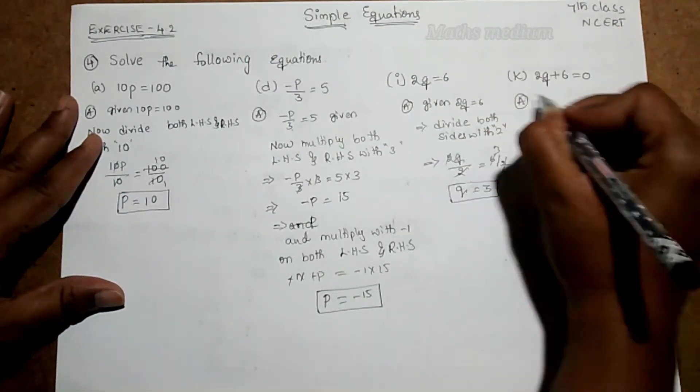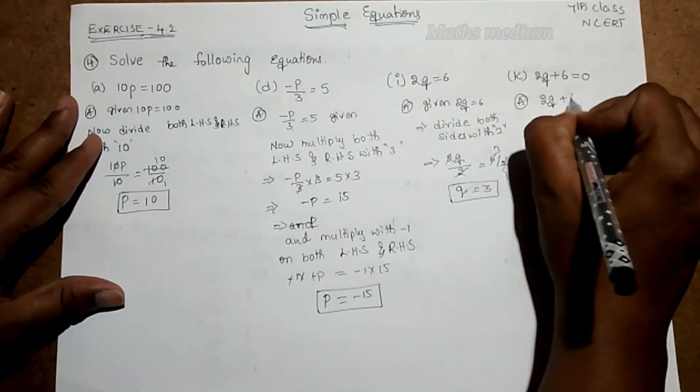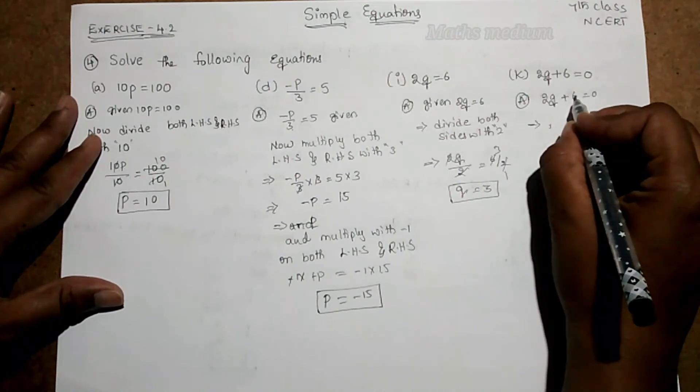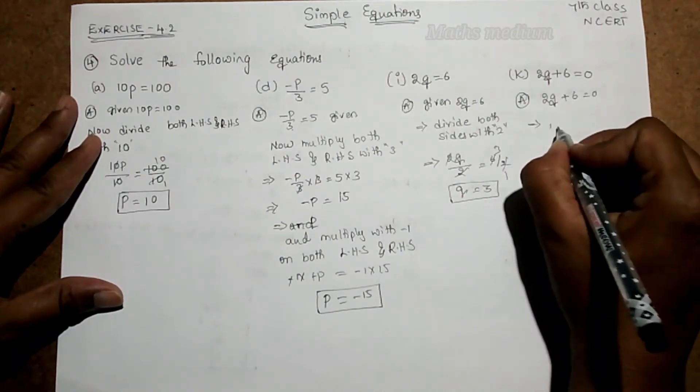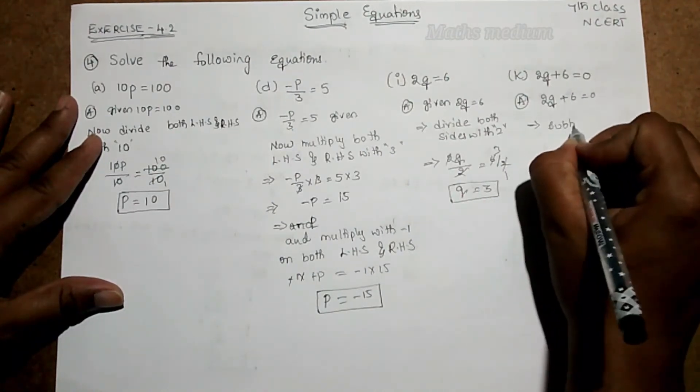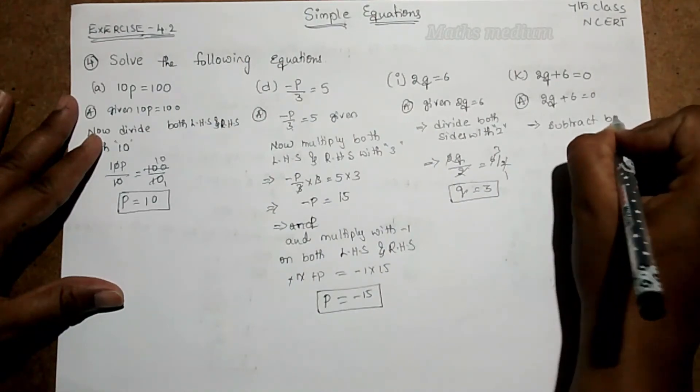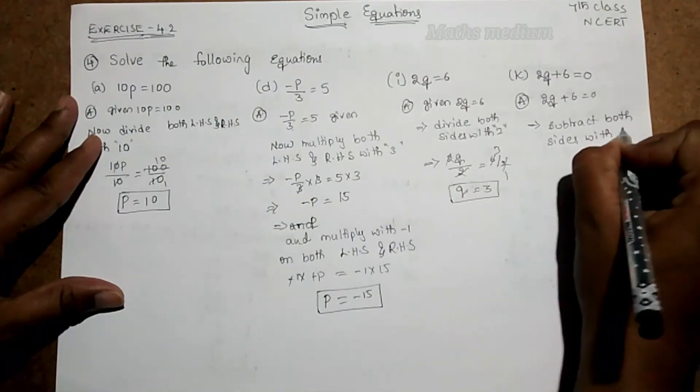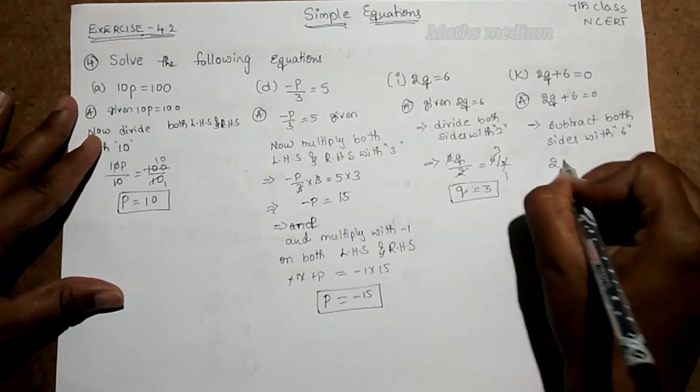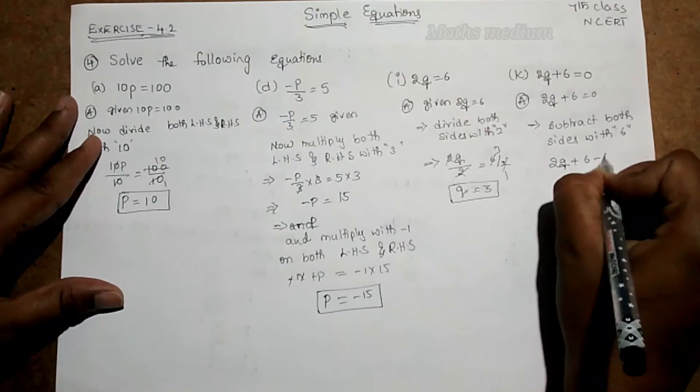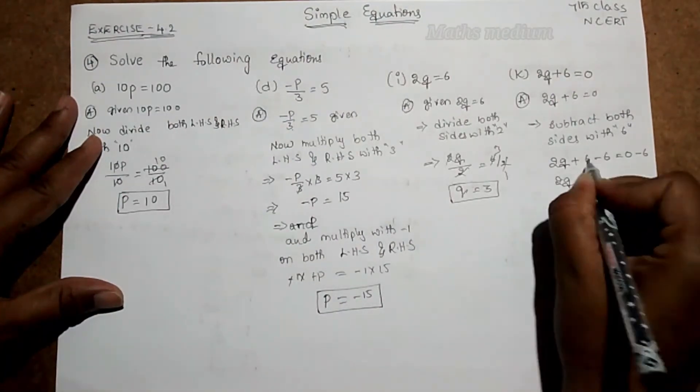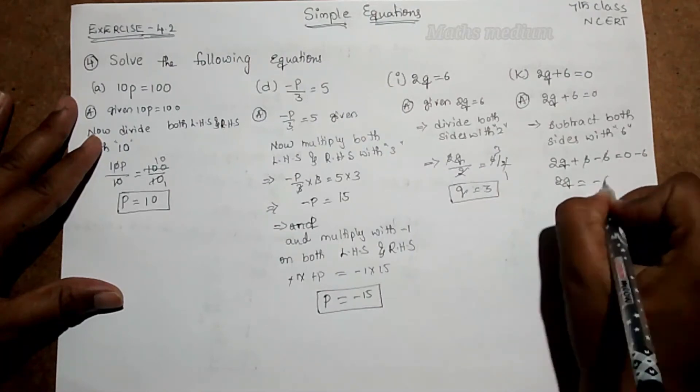Similarly here also, 2q plus 6 equal to 0. Now we have to subtract, because here we're adding one element, so we have to subtract it. So subtract both sides with 6. So 2q plus 6 minus 6 is equal to 0 minus 6. So 2q, 6 and 6 get cancelled. So minus 6.